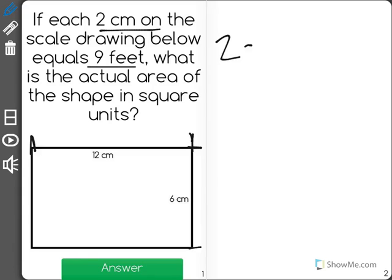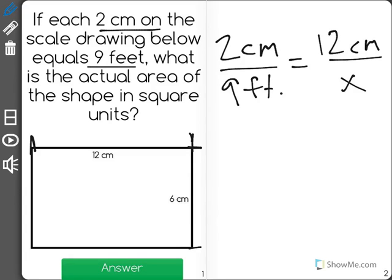So it said that 2 centimeters is equal to 9 feet. And I'm going to write this actually as a ratio over here. So I'll say 2 centimeters over 9 feet is equal to 12 centimeters over x, because we're trying to find out how many feet this is.